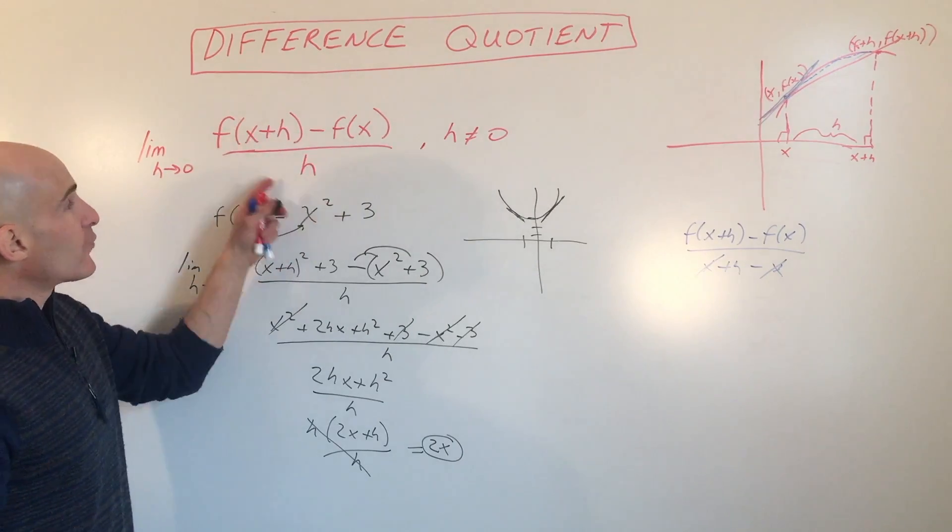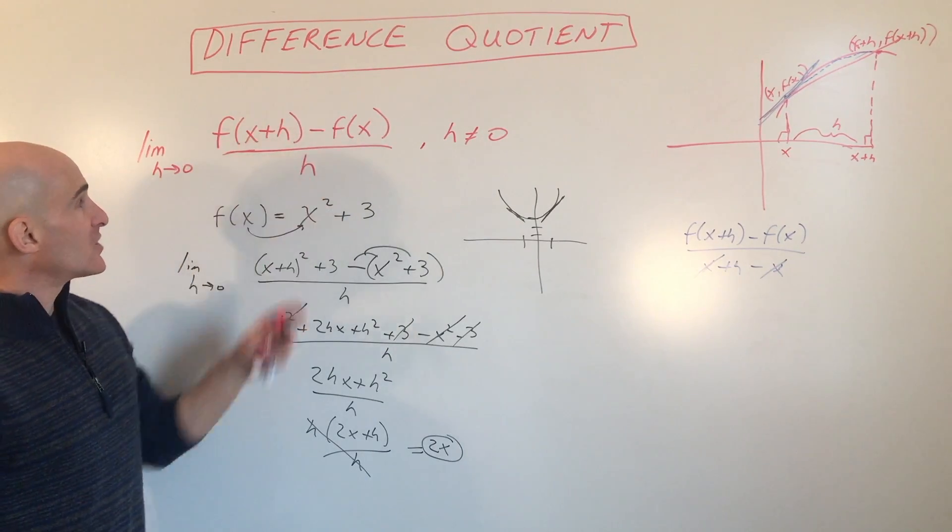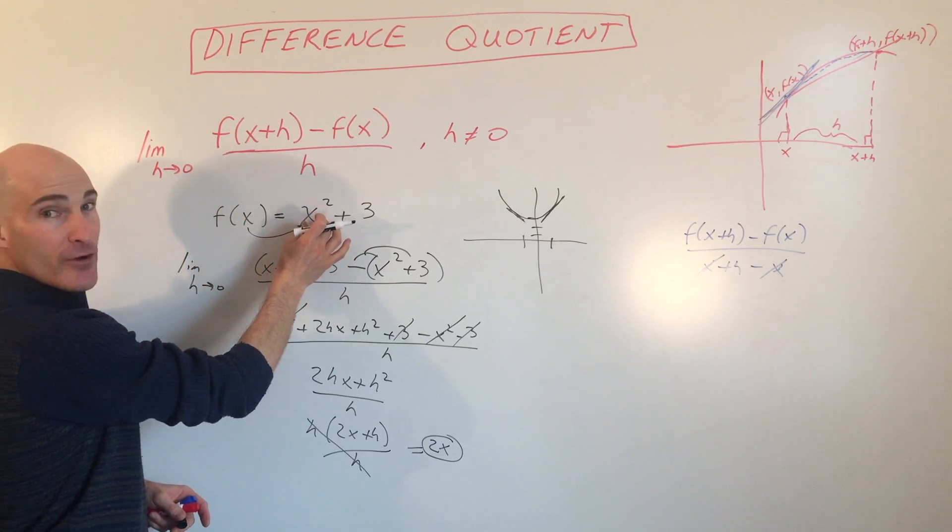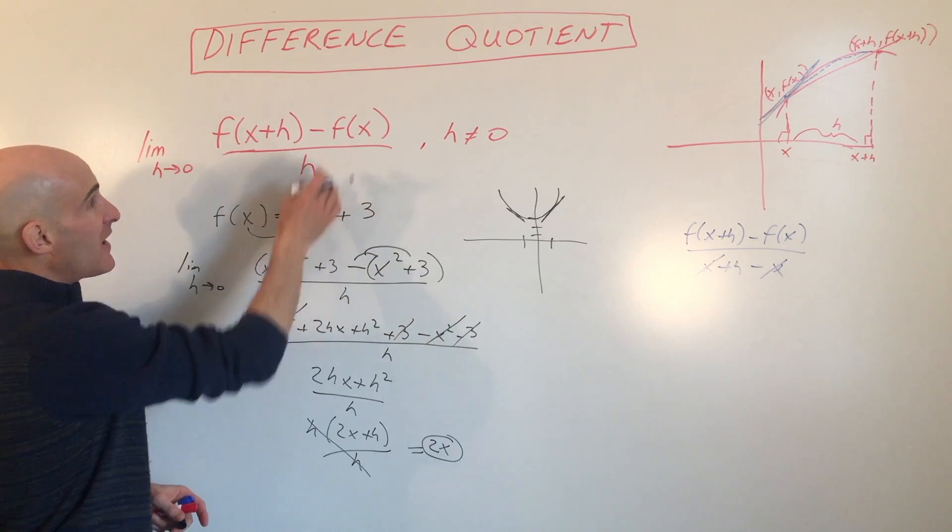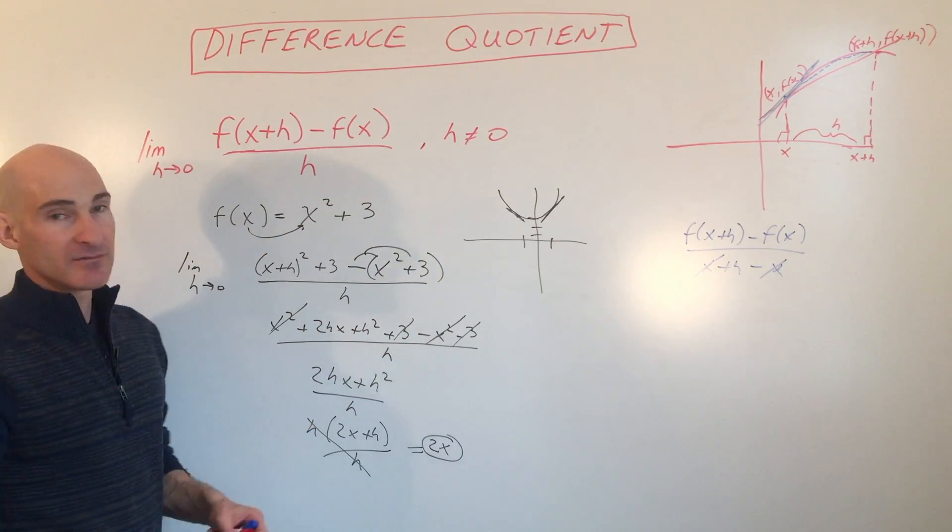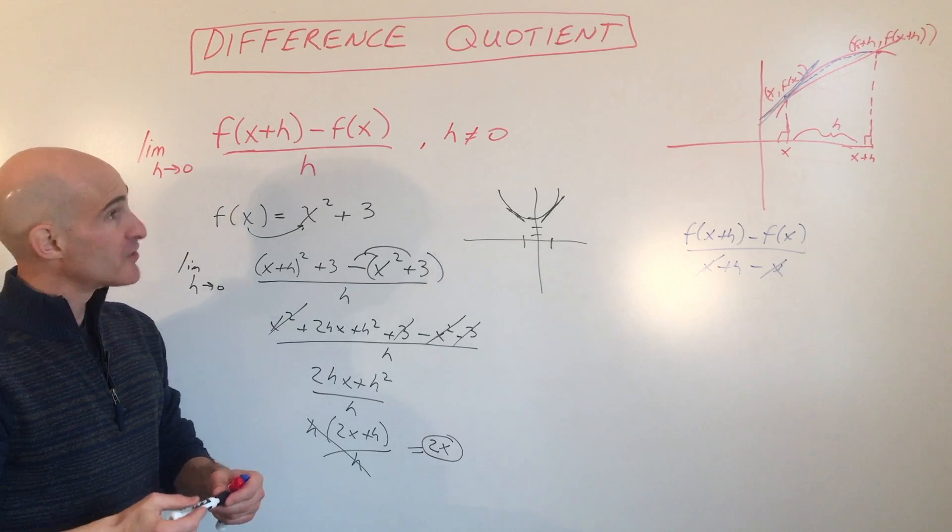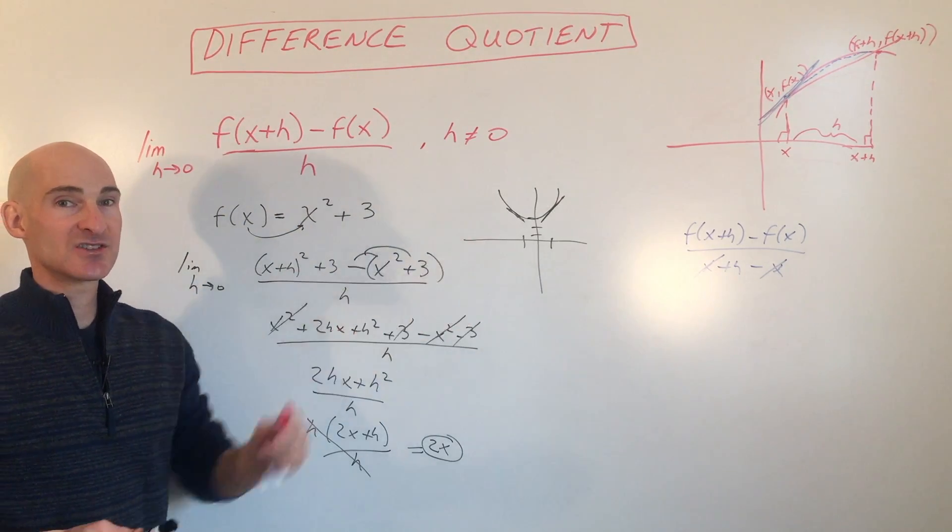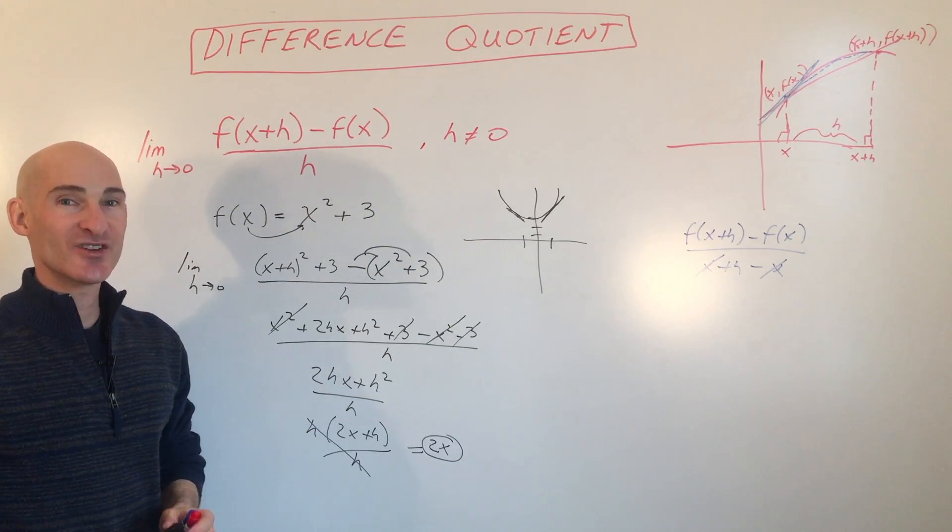So this is the formula. You want to memorize the difference quotient, and all it is is just a substitution. You're putting x + h in for x and simplifying, and you're subtracting f(x), which is the original function, and then simplifying. This has been an introduction to finding the difference quotient and its applications in calculus.